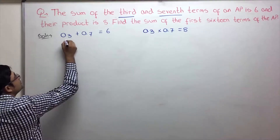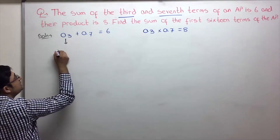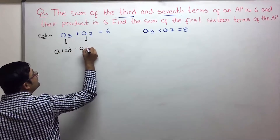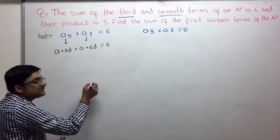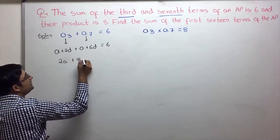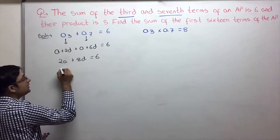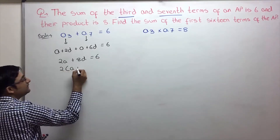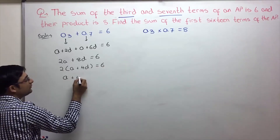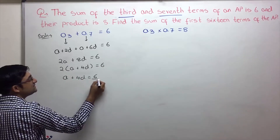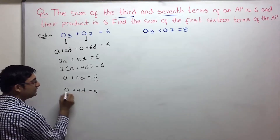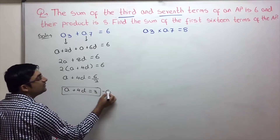The third term of an AP is A plus 2D, and the seventh term is A plus 6D. Their sum is given as 6, so A plus 2D plus A plus 6D equals 6, which gives 2A plus 8D equals 6. Taking 2 common, we get A plus 4D equals 3. This is our first equation in A and D.